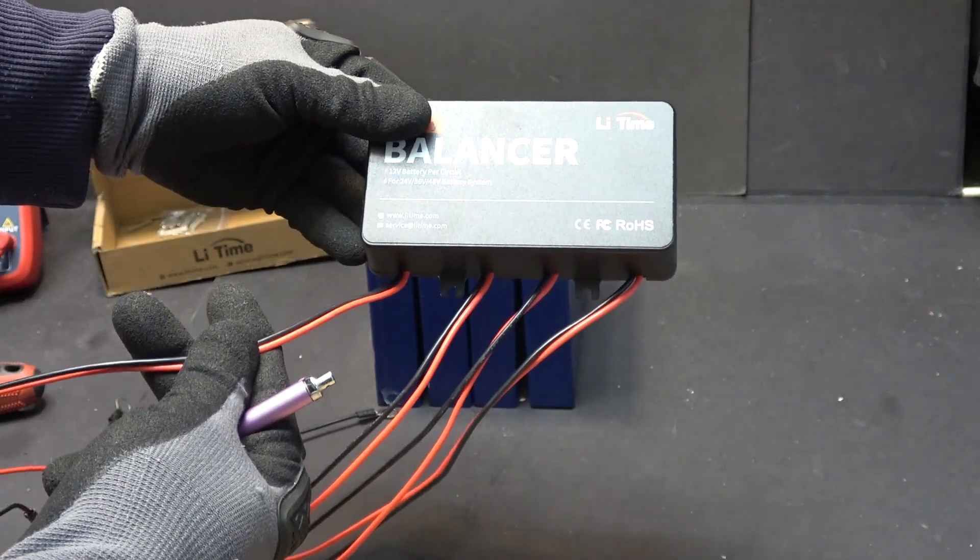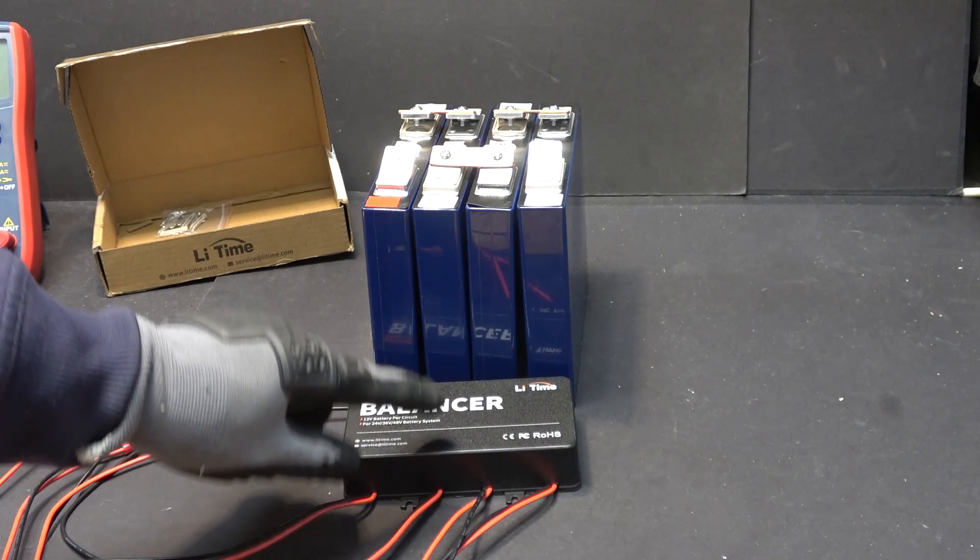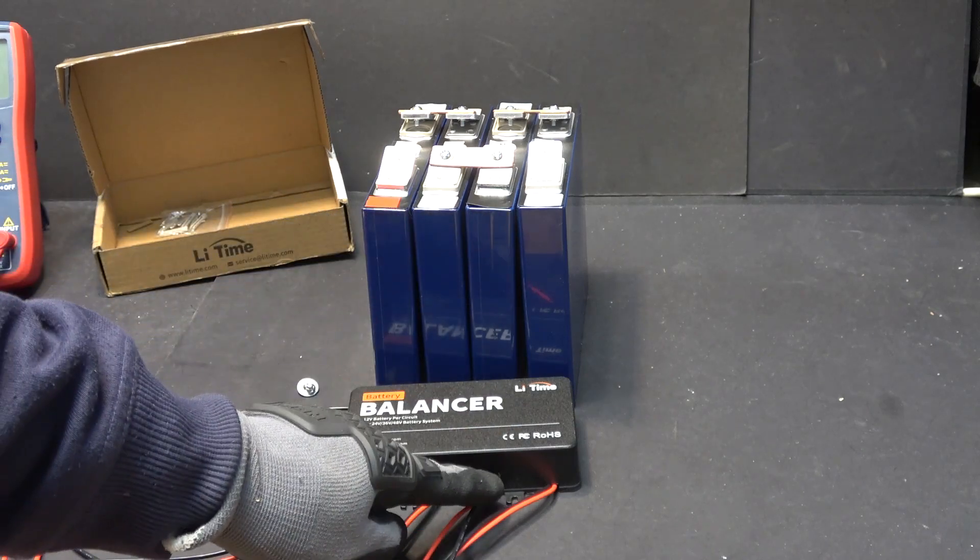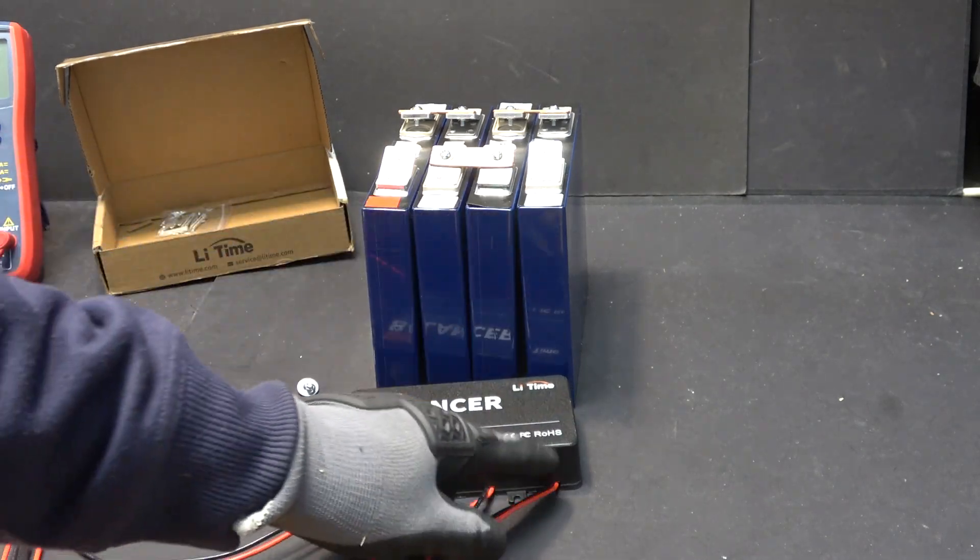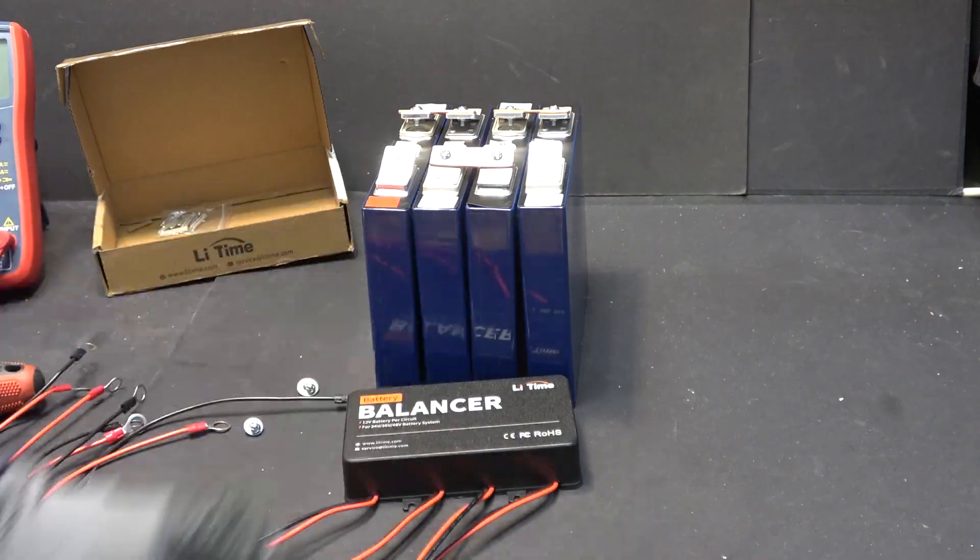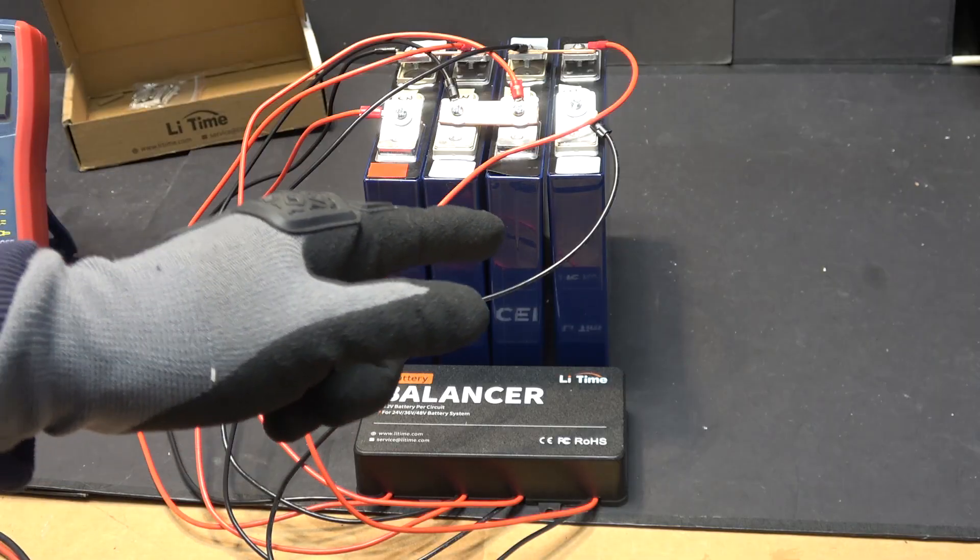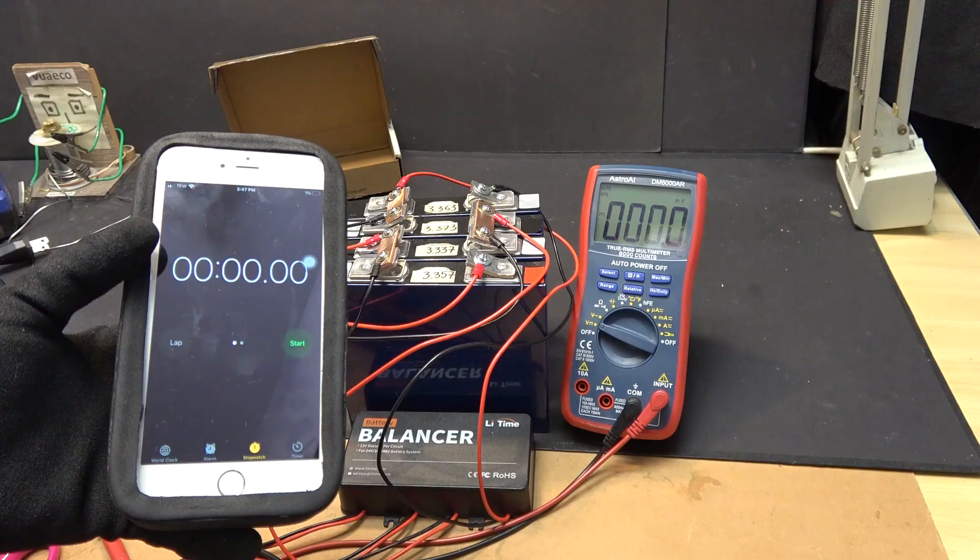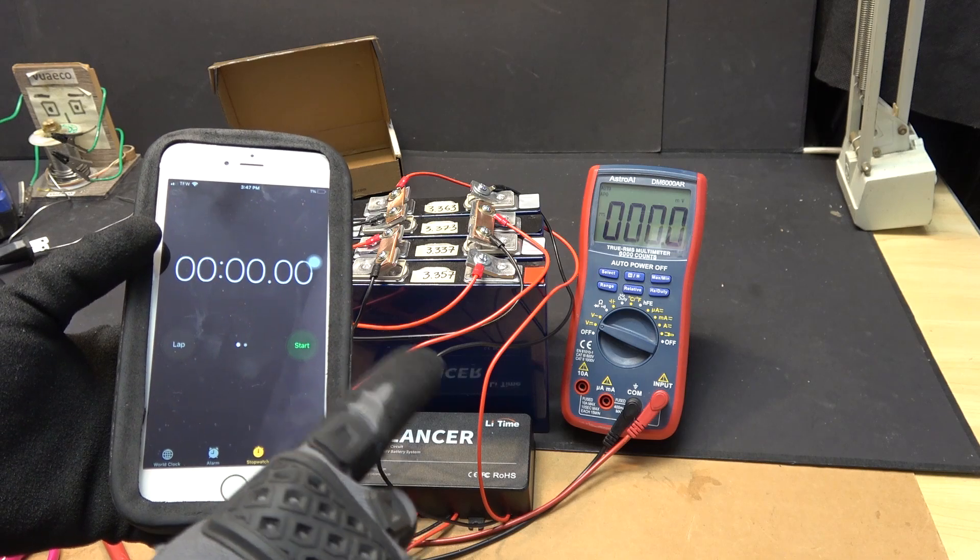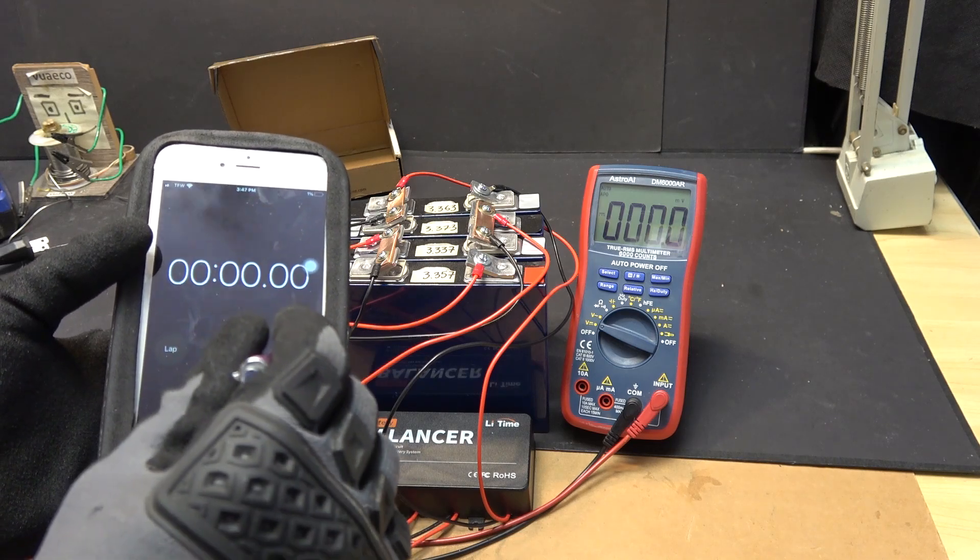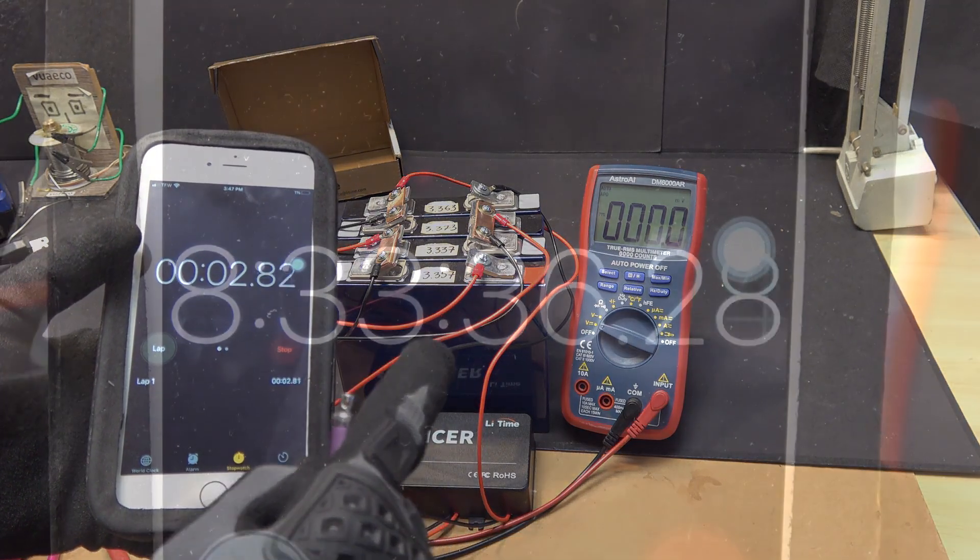So it will be the first pair of wires on the left, which is this pair right here. And then the second pair will go to the second cell, third pair, third cell, the fourth pair goes to the last cell. I have just finished connecting the balancer to the battery pack. This is going to take some time to balance out, so I'm going to turn on my timer and I'll be back in a few hours.